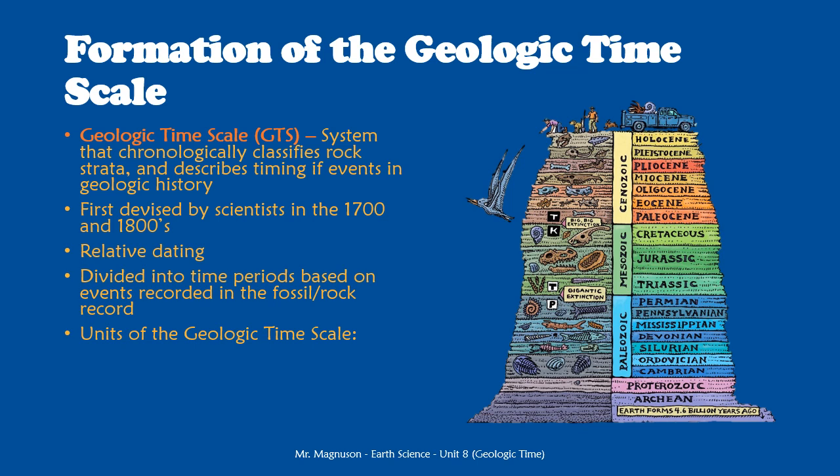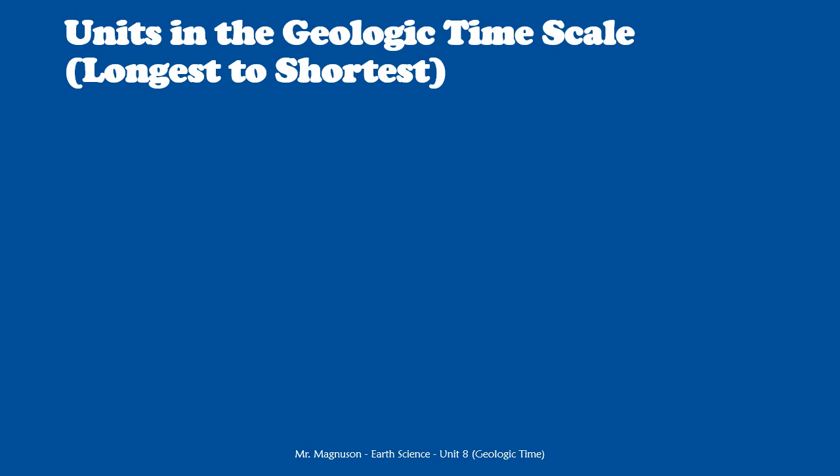There are four units in the geologic time scale — just like we have different units of time every day, such as minutes, seconds, and hours. The biggest unit of the geologic time scale is an eon, followed by an era, a period, and an epoch. We are going to look at these units from longest to shortest. The eon is the longest unit and the epoch is the shortest unit in the geologic time scale.